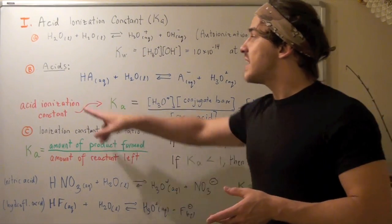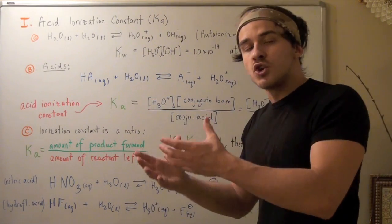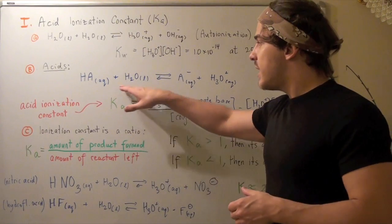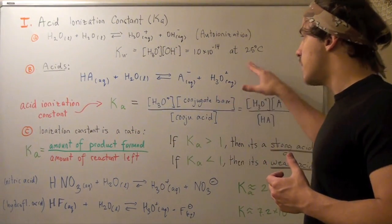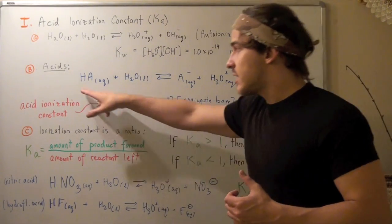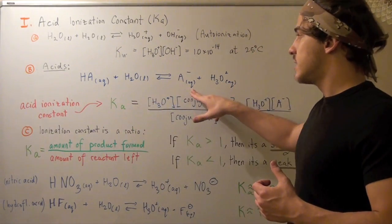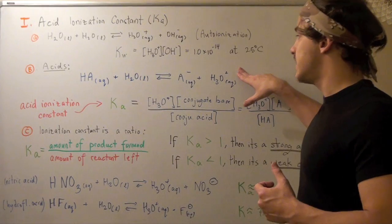What will happen? This acid will donate the H. The base will accept that H, creating a hydronium ion and a conjugate base. So we have our conjugate acid and conjugate base pairs.